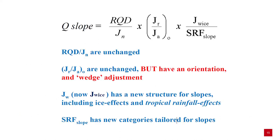The Q-slope method for rock slope engineering is based on the original Q-system. The formula for Q-slope retains RQD and JN unchanged, as do JR and JA. However, an orientation factor has been included to adjust for potential wedges. JW accounts for new structure for slopes, including ice effects and tropical rainfall effects. SRF has new categories tailored specifically for slopes.